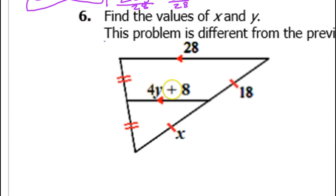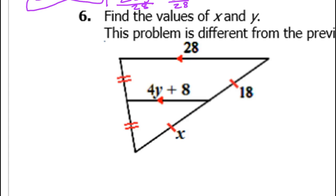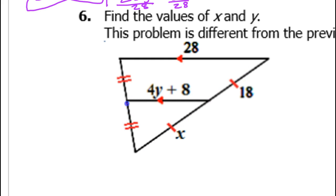Number 6 is different and easier. Am I going to do the side-splitter theorem or the mid-segment theorem? This time I can do the mid-segment theorem. See the tick marks? These show that the segments on either side are congruent, which means I have midpoints here and here. So this is a mid-segment.